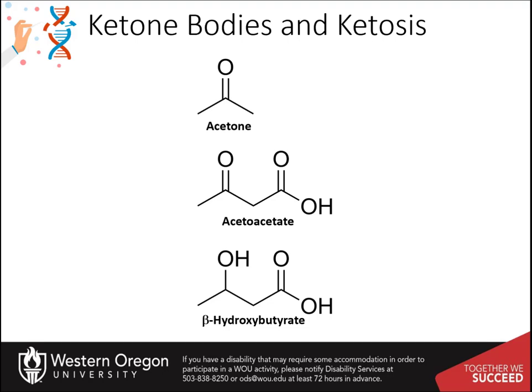In physiologic ketosis, ketones in the blood are elevated above baseline levels, but the body's acid-base homeostasis is maintained. The two main ketones formed are acetone and acetoacetate. Beta-hydroxybutyrate is also considered a ketone body even though it is an alcohol, or reduced form, of acetoacetate.